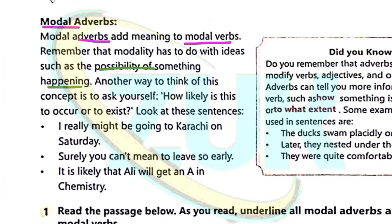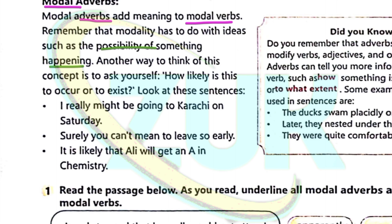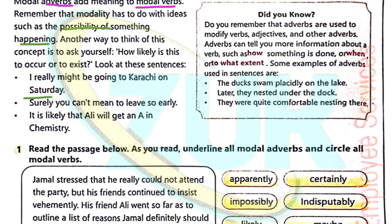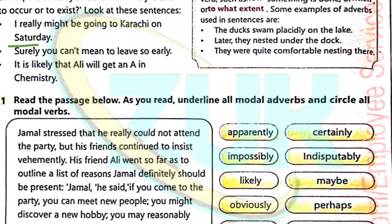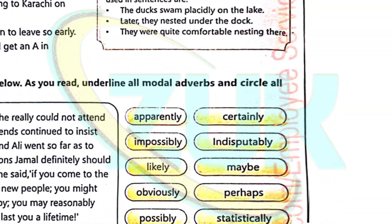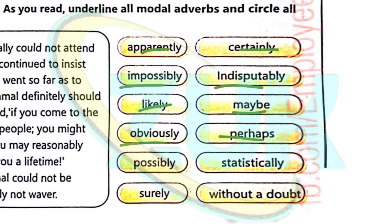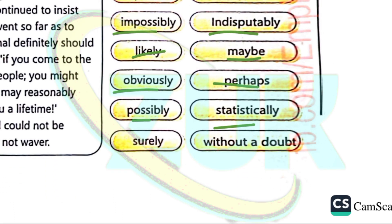Look at this sentence: 'I really might be going to Karachi on Sunday.' The modal adverbs include: apparently, certainly, impossibly, indisputably, likely, maybe, obviously, perhaps, possibly, statistically, surely, without a doubt.